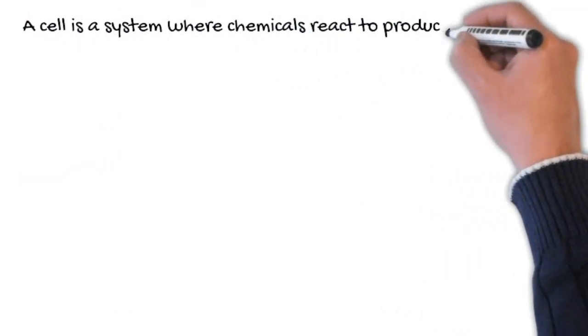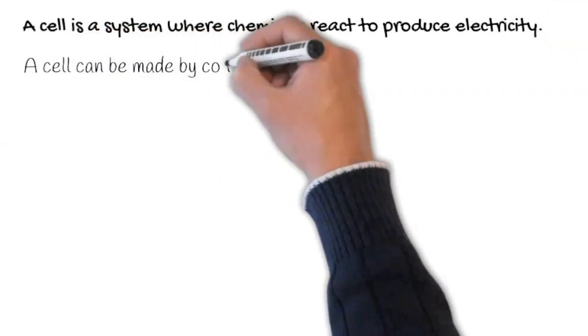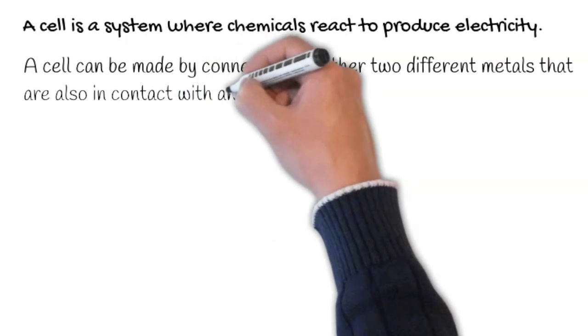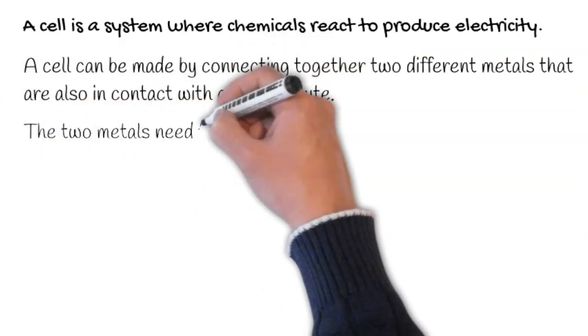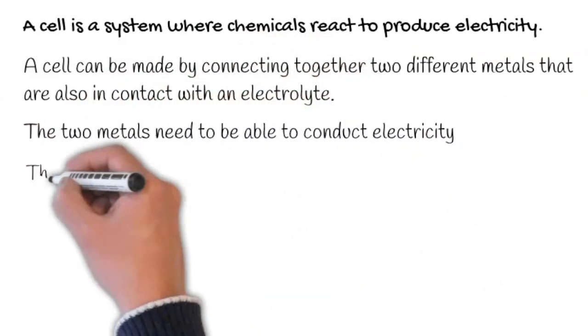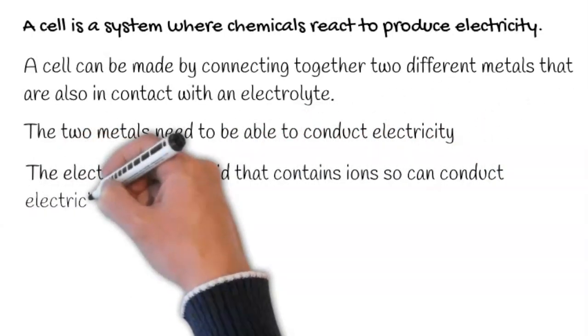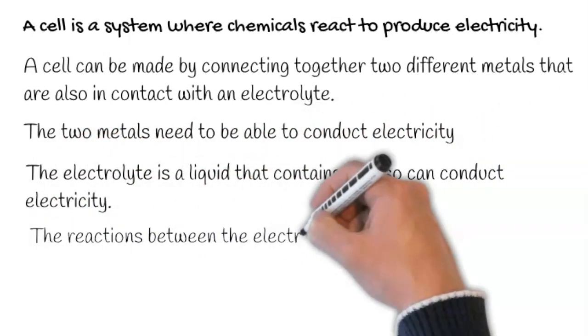A cell is a system where chemicals react to produce electricity. A cell can be made by connecting together two different metals that are also in contact with an electrolyte. The two metals need to be able to conduct electricity. The electrolyte is a liquid that contains ions so can conduct electricity.